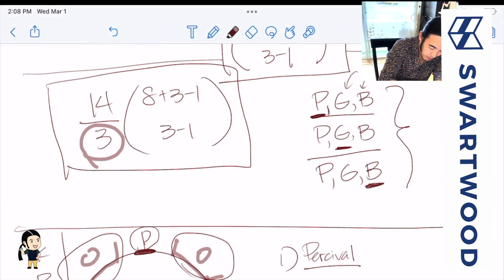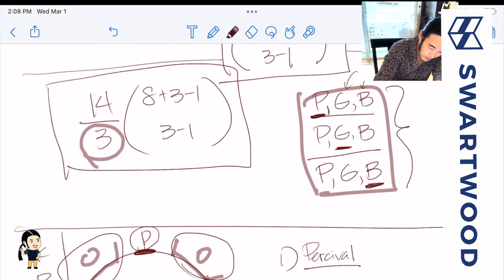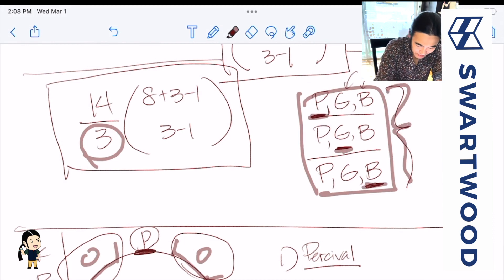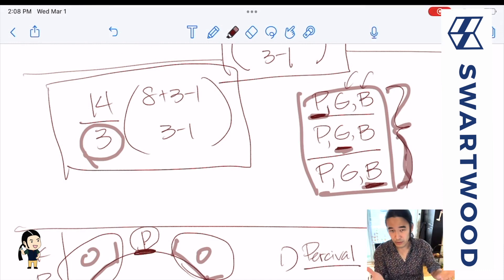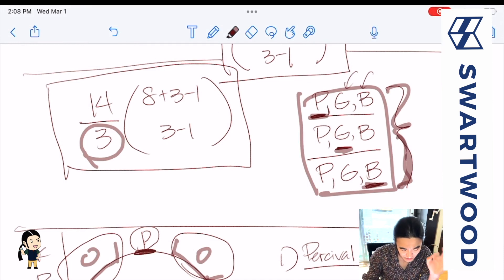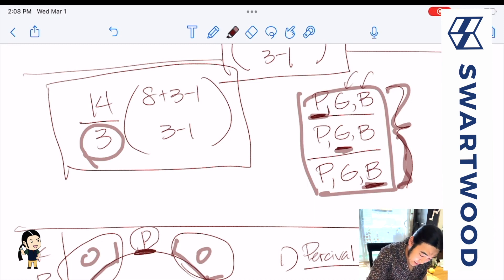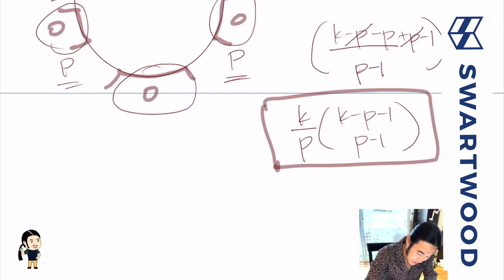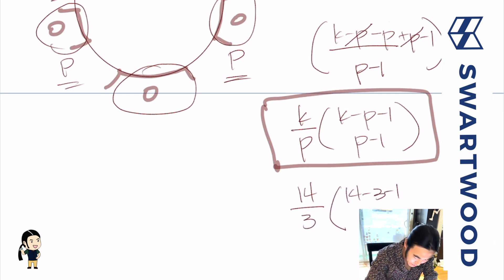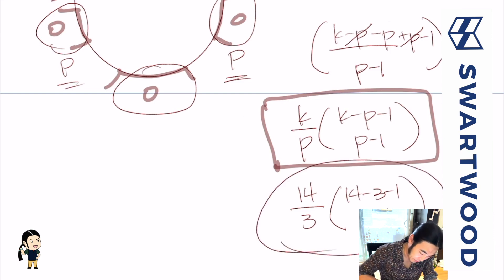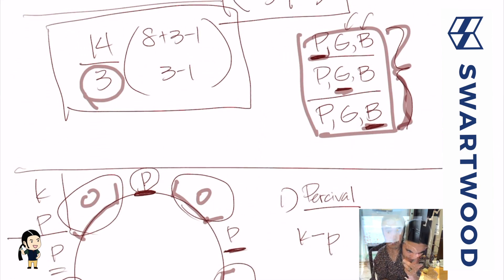To clarify the overcounting: remember when we picked the committee of three - Percival, Galahad, Bors - there were three different leaders for the same group. We made up the leader idea to help us count, but the group P, G, B is one group. So the answer is K over P times K minus P minus 1 choose P minus 1. Let's verify: with K equals 14 and P equals 3, we get 14 minus 3 minus 1, choose 3 minus 1 - that's exactly what we had before.